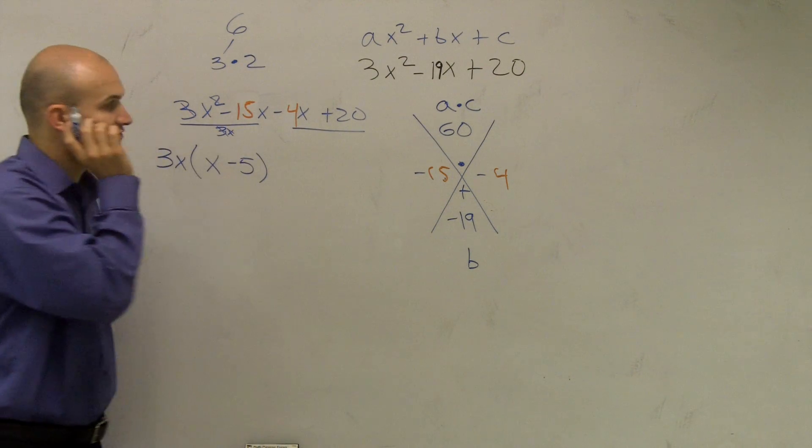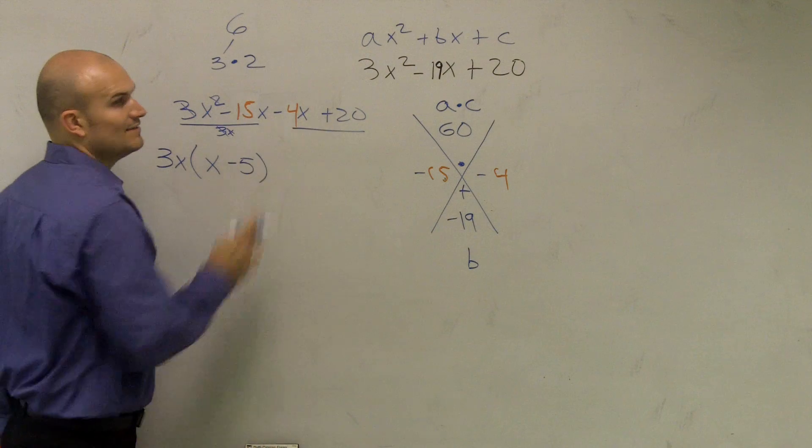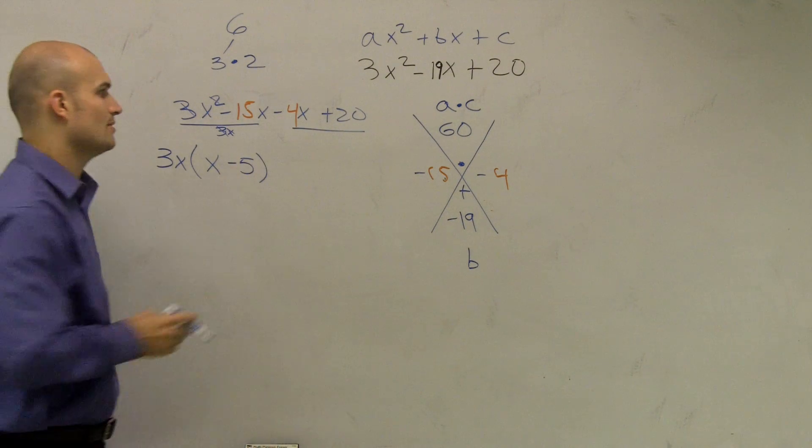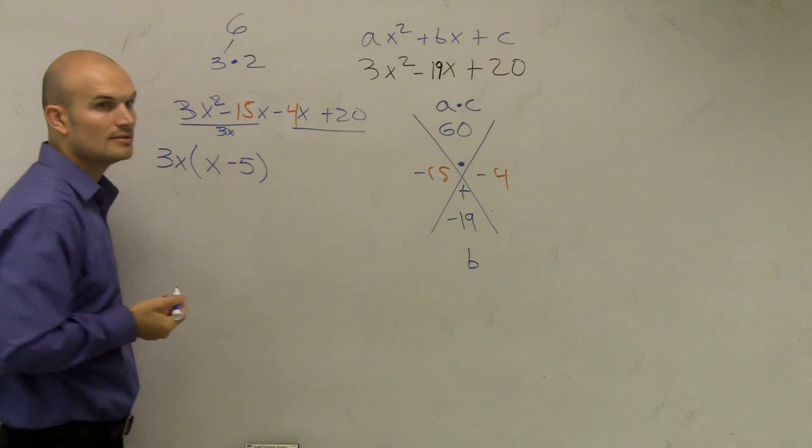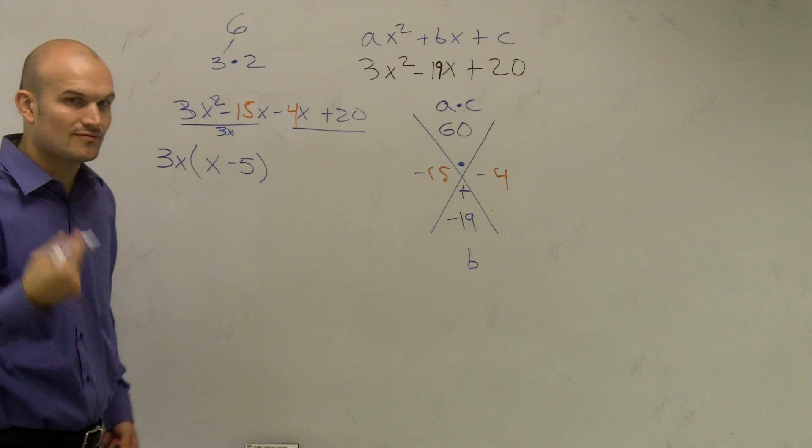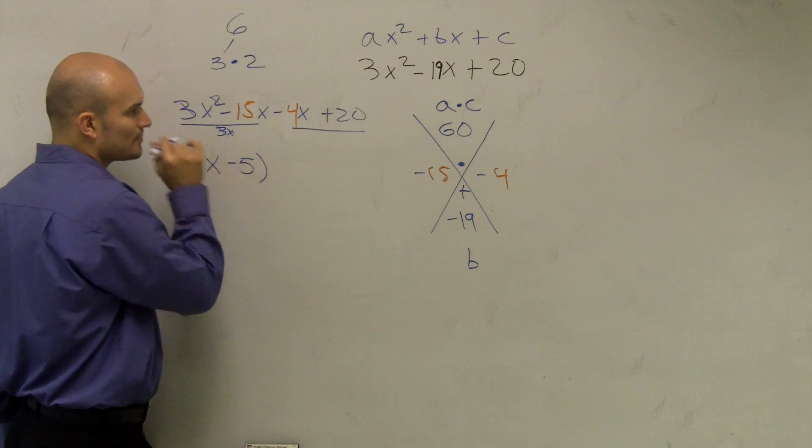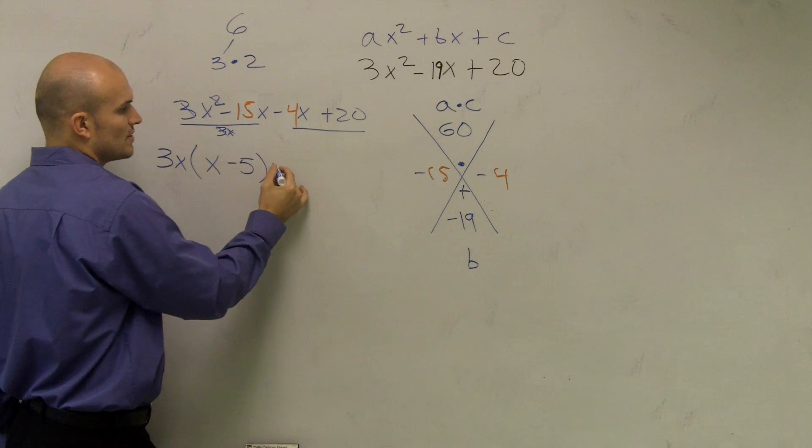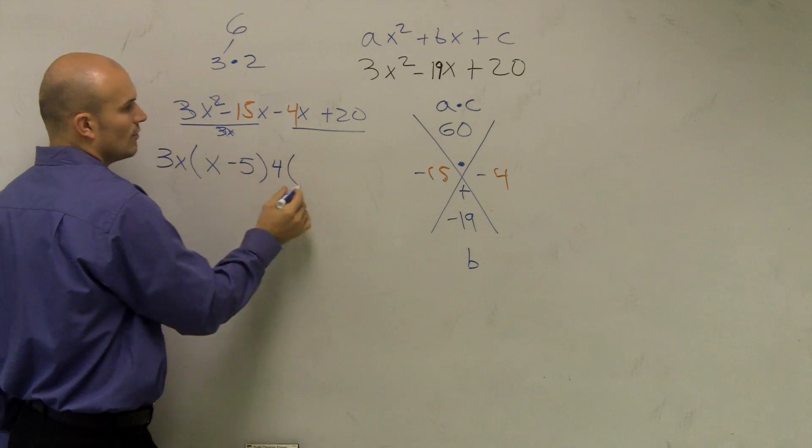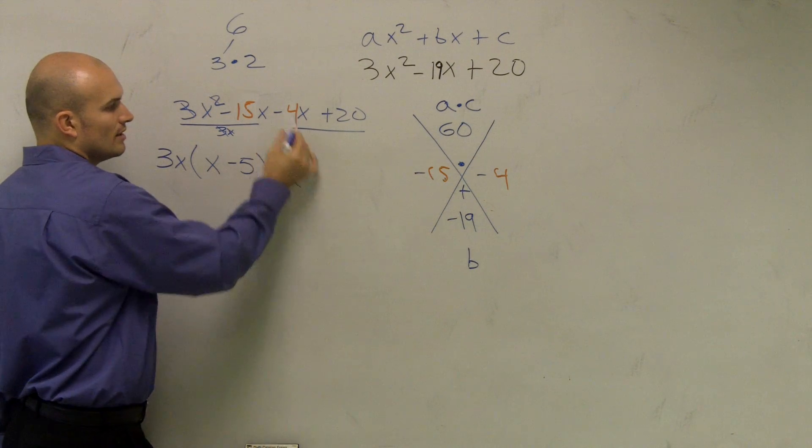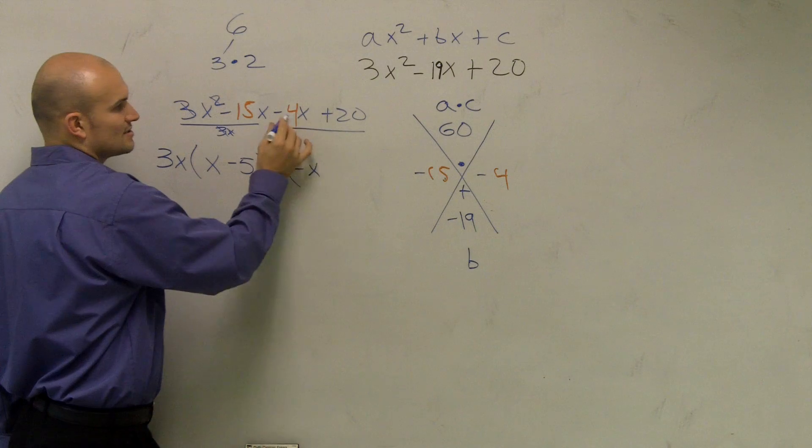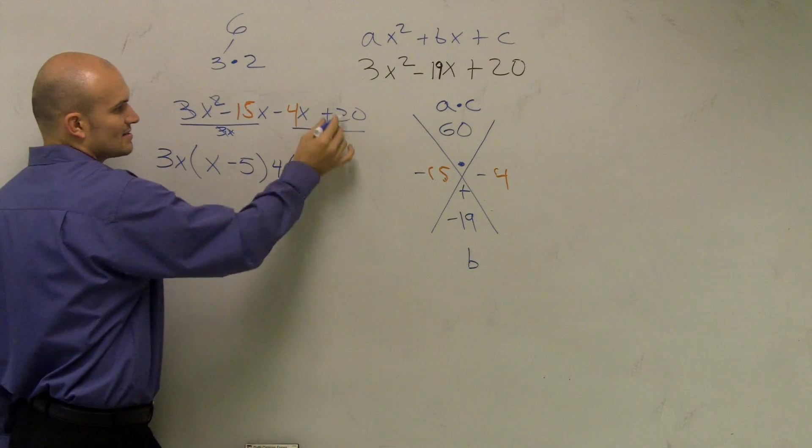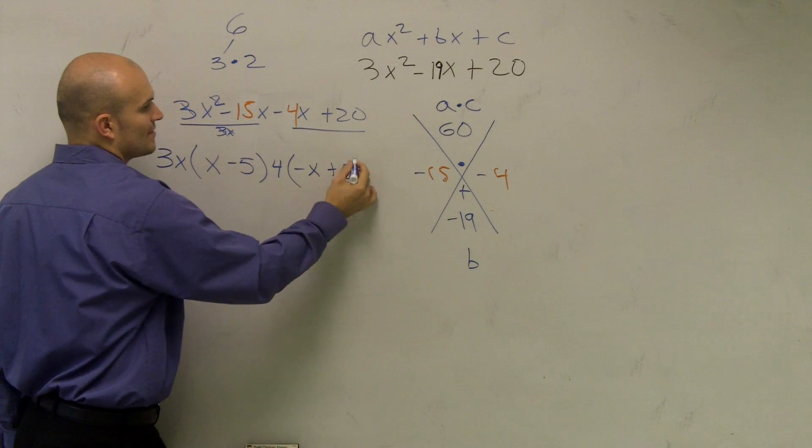Then I look at the next two terms. Negative 4x plus 20. What number evenly divides into negative 4x plus 20? And we can say a negative 4 or a positive 4. And what we're going to do is a quick little distinction. A lot of students want to write a positive 4. Well, what happens when we write a positive 4, that's going to leave us with a negative x. Because negative 4x divided by 4 is a negative x. And 20 divided by positive 4 is a positive 5.